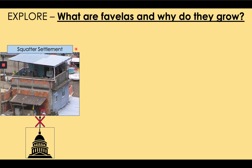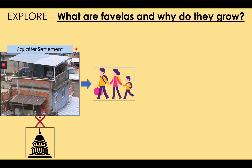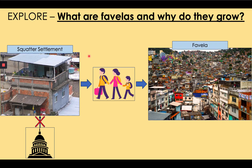Squatter settlements have grown in Rio de Janeiro because of migration. In the 20th century and continuing today, migration to Brazilian cities has been extremely high — too high for the government to build affordable quality housing with sewers, wide roads and public transport. Consequently people arriving in the cities are forced to build homes on illegal land in difficult locations, such as on the hills of Tijuca National Park, which is where Rocinha, Rio's largest favela, is located.